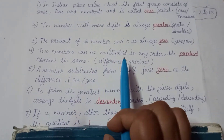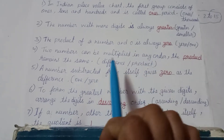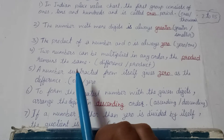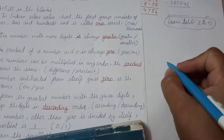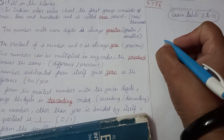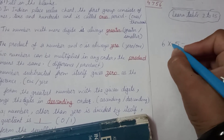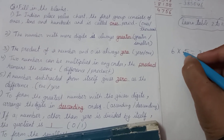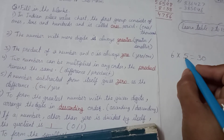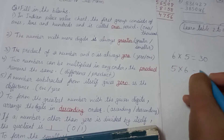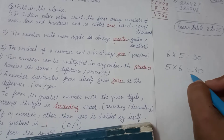You can multiply two numbers in any order — the product remains the same. For example, if we multiply 5 and 6, the answer is 30. If we change the order to 6 multiplied by 5, the answer is still 30. So 5 × 6 = 30 and 6 × 5 = 30.